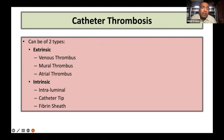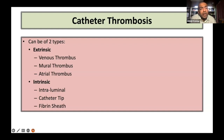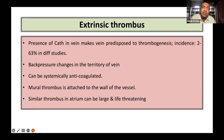Catheter thrombosis can be of two types: extrinsic or intrinsic, meaning whether the problem is inside the catheter or outside. Inside the catheter, typically one can have venous thrombosis, mural thrombosis, or arterial thrombosis, meaning the thrombus is present in the catheter. The catheter gets encased in a thrombus in the vein, or it has a large arterial thrombus hanging at one end of the catheter. Extrinsic thrombus: the presence of the catheter in a vein makes the vein predisposed to thrombogenesis, and the incidence is anywhere from 2 to 63% in different studies. Back pressure changes can occur in the territory of the vein, and this can require systemic anticoagulation.